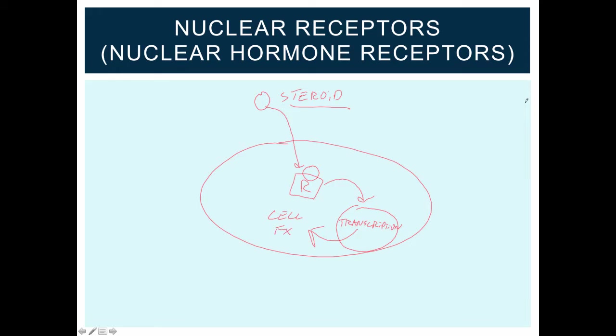Again, because we're talking about changes in transcription, it takes hours for these signaling events to occur, from the moment that ligand makes its way into the cell to the moment that we get a cellular change. Estrogen and the estrogen receptor are examples of nuclear hormone receptors.